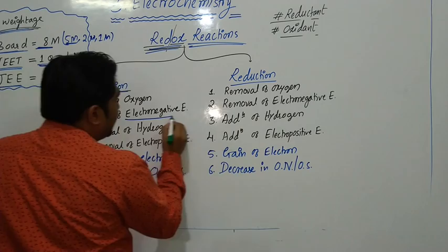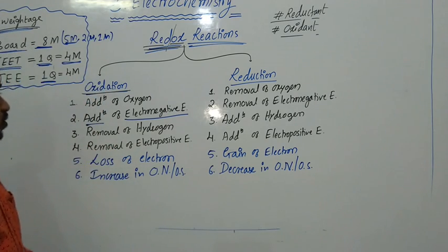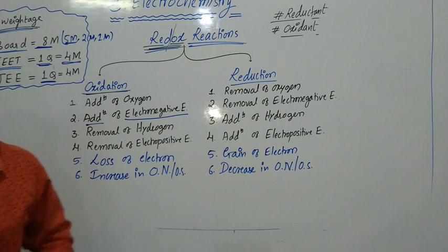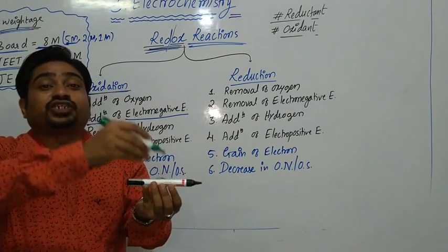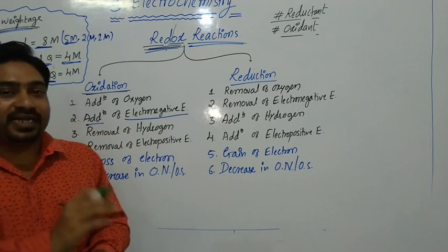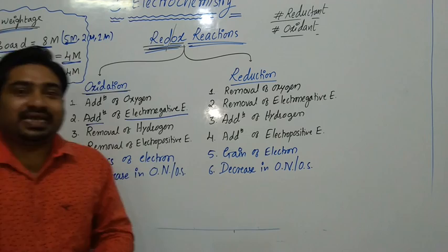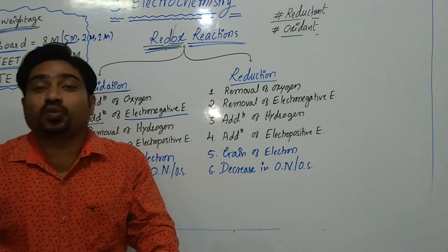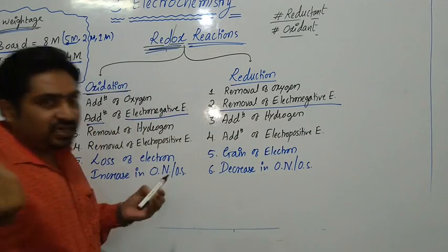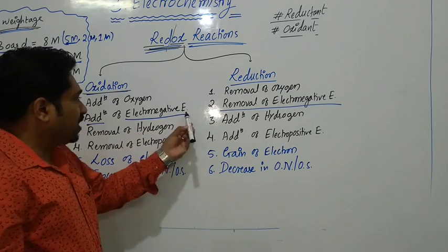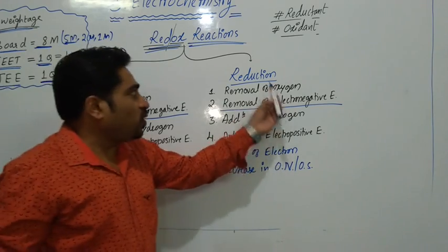The addition of an electronegative element other than oxygen — such as chlorine, fluorine, or nitrogen — to an element or compound is also called oxidation. Correspondingly, the removal of an electronegative element from a compound is called reduction.